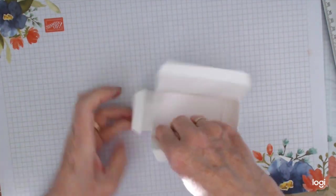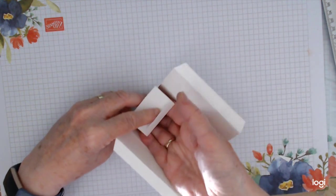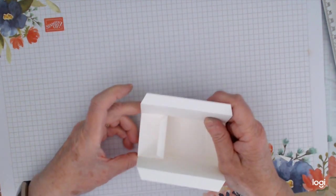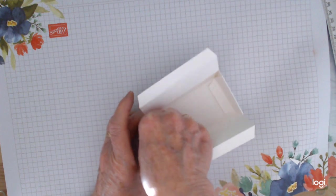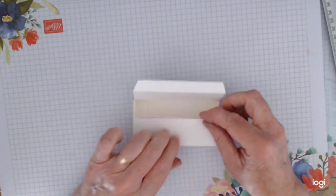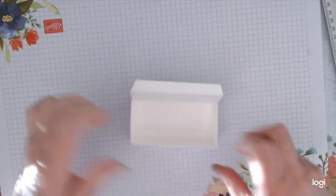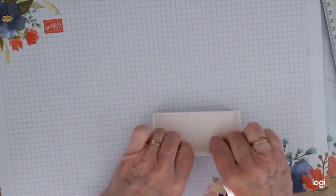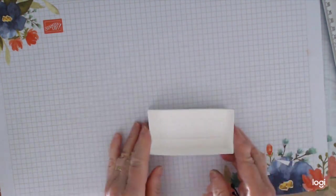Do the same with this side. Tuck your two—oh, forgot to score that one—two flaps in, and make sure you're catching them. And pop this over. And that gives you that basic shape. And then this one's going to go down and hold it all in place for you.